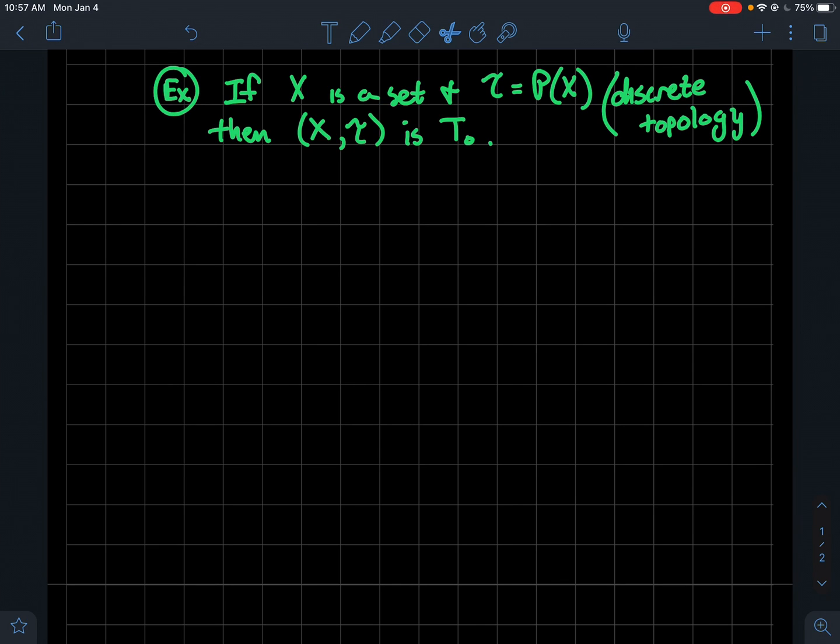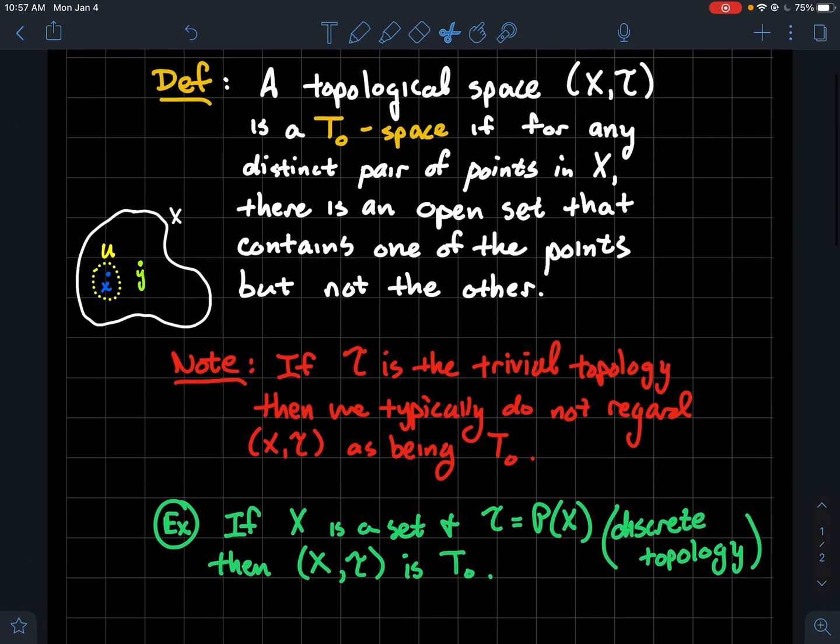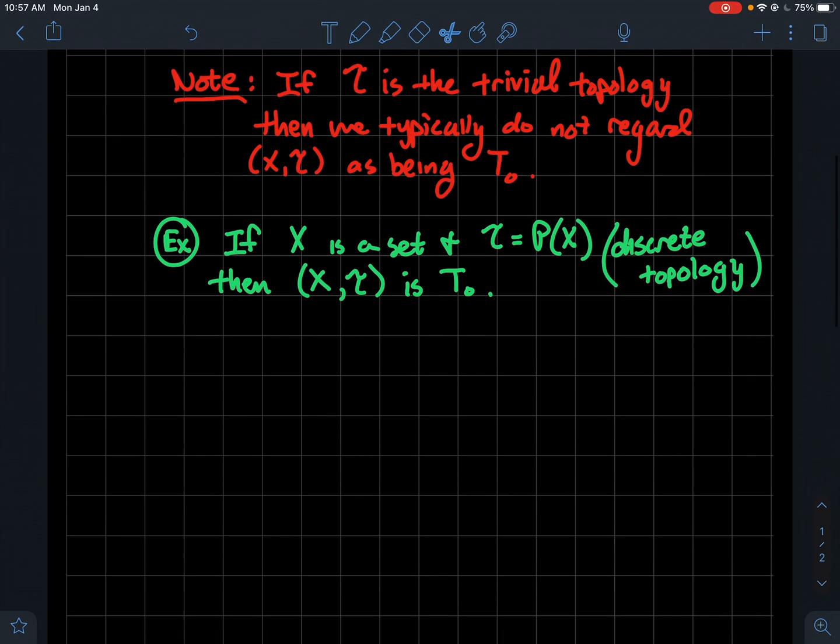And so let's walk through what do you do, how do you show this? And again this is just kind of getting comfortable with the definition up here. So what do you need to show? From the definition you need to take two distinct points and show that there's an element in the topology that contains one of the points but not the other one. And maybe you see now that oh man the discrete topology is fantastic because there's so many open sets.